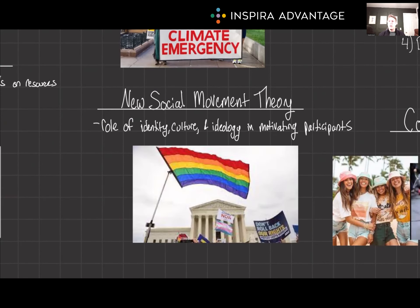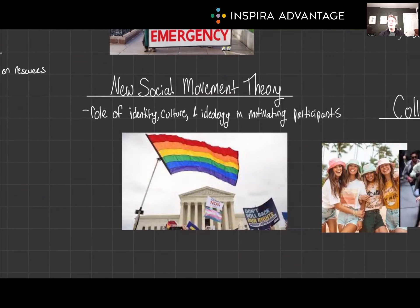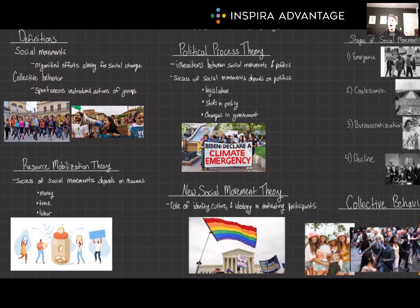Unlike the other theories that focus on material and political aspects, new social movement theory emphasizes the role of identity, culture, and ideology in motivating participants. It suggests that contemporary movements are more concerned with social and cultural change rather than economic issues. These movements often arise from post-industrial society concerns, including environmental protections, human rights, and social equality. They are characterized by decentralized organization and an emphasis on creating meaning and identity for the participants. Each of these theories provides a unique lens through which to view social movements, and for the MCAT, recognizing the diversity of these theories aids in understanding the broader sociological processes at play.